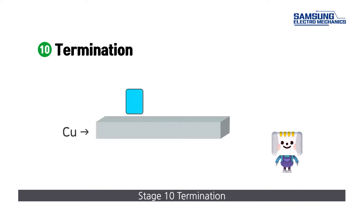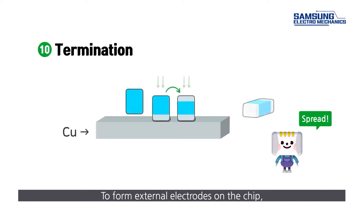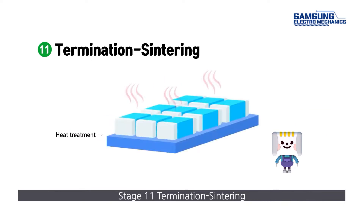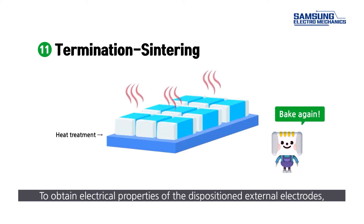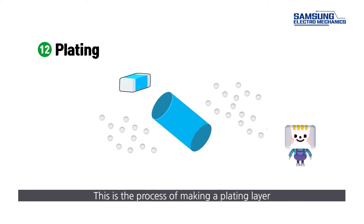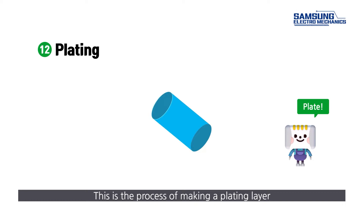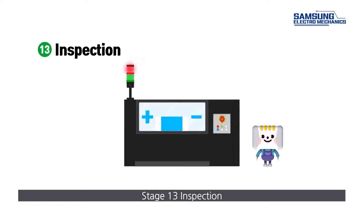Stage ten: termination. To form external electrodes on the chip, electrode materials are deposited on both ends of the chip. Stage eleven: termination sintering. To obtain electrical properties of the deposited external electrodes, heat treatment is applied once again at high temperature. Stage twelve: plating. This is the process of making a plating layer so that the MLCC can easily stick to the actual substrate. Stage thirteen: inspection. This is a process to check whether ceramic chips are good or bad.